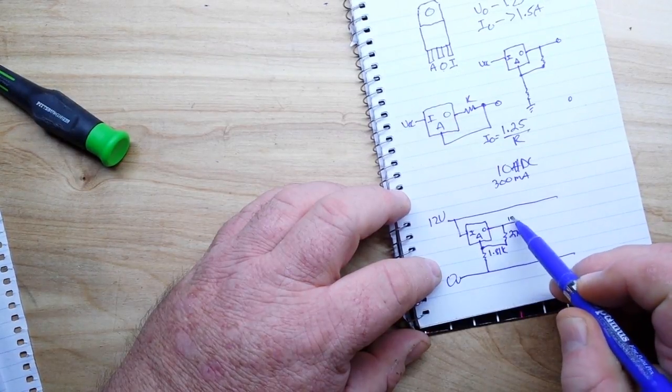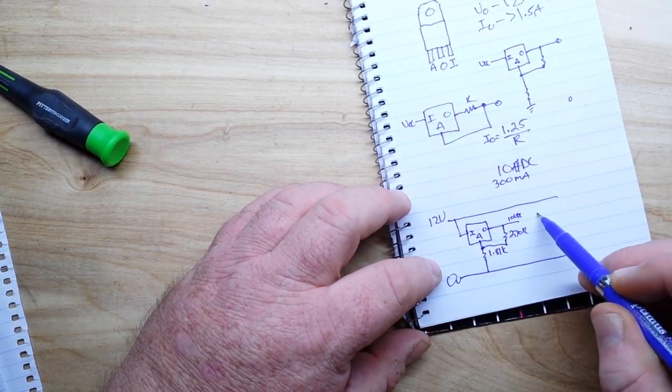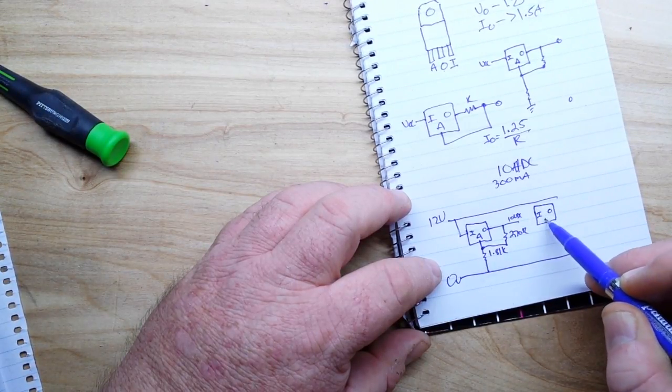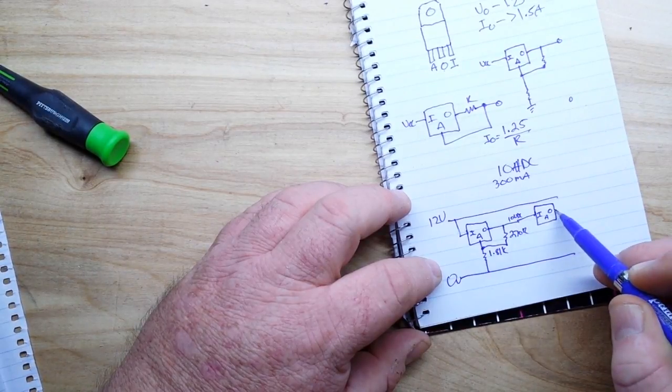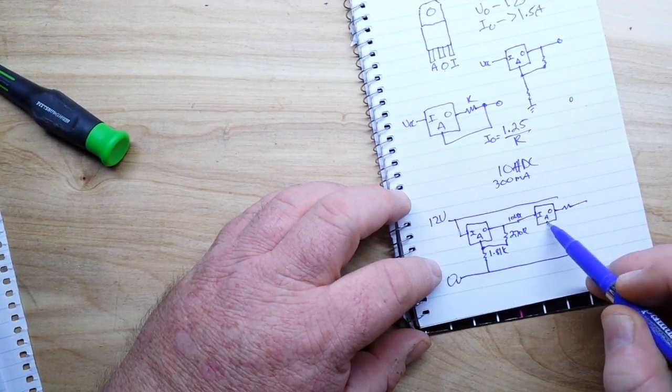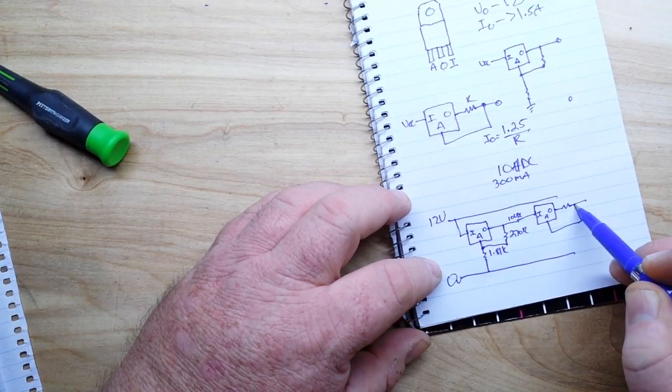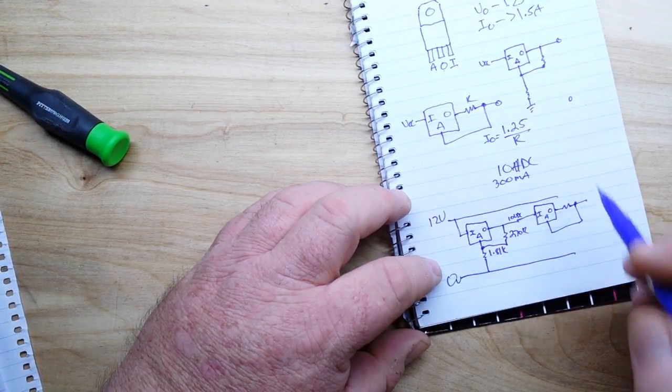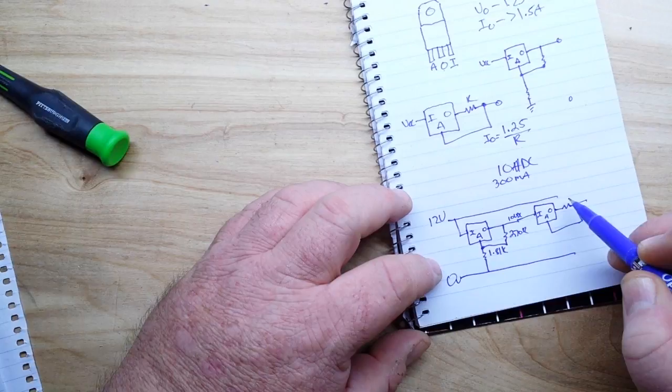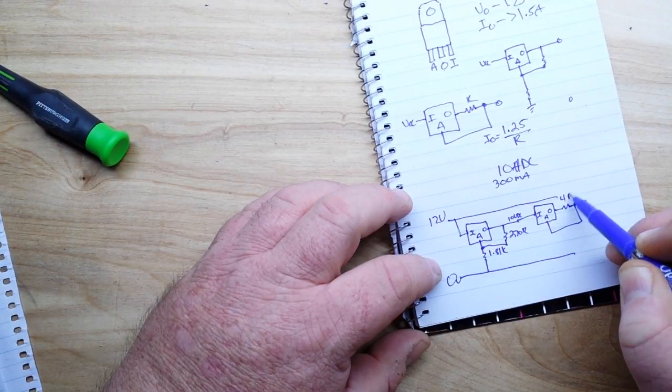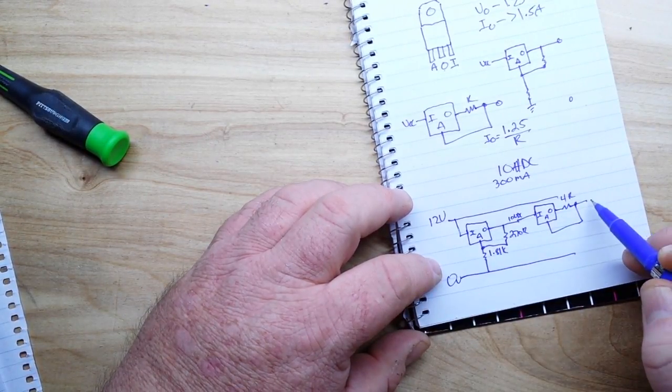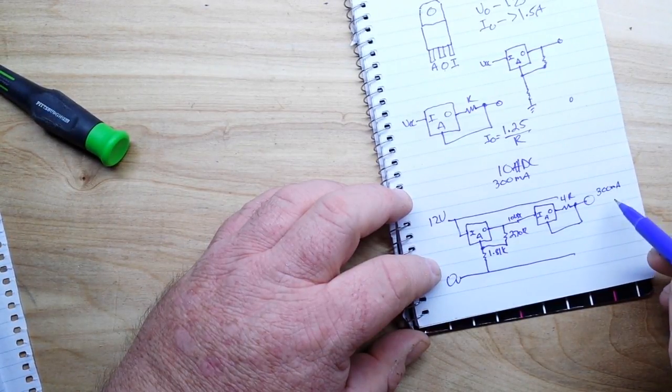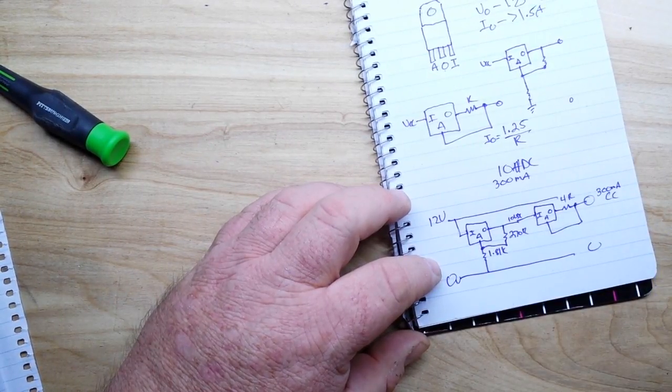we will get 10 volt DC coming out here. Now we use a second LM317 like this: input, output, adjust. If we use a resistor value of around somewhere around 4R, we should get 300 milliamps constant current at that point in the circuit.